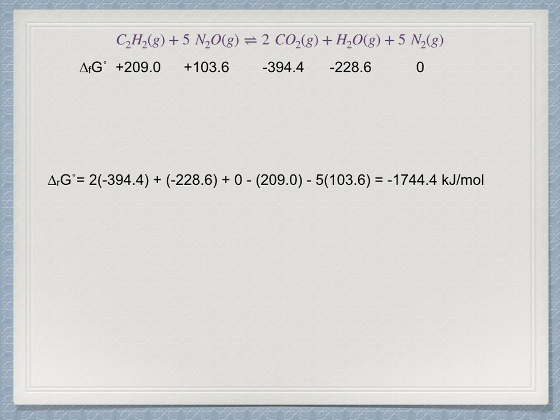When a reaction has a negative change in Gibbs energy, we say it is exergonic. Similarly, a reaction with a negative enthalpy of reaction is exothermic. By contrast, a reaction with a positive Gibbs energy is called endergonic. The reaction of acetylene with nitrous oxide is very exergonic. This answer is applicable at room temperature, 298.15 kelvin.